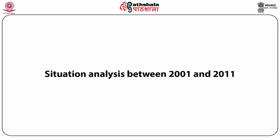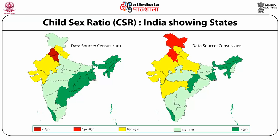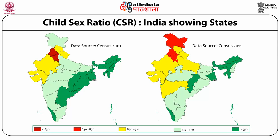Looking at the situation between 2001 and 2011, both census maps show that a place like Jammu and Kashmir had the sharpest drop in the 2011 census. While Punjab and Haryana improved a little bit, there were very sharp drops in Uttar Pradesh and Maharashtra. Gujarat and Rajasthan overall remained at similar levels, but many districts of Rajasthan saw significant drops while some districts of southern Gujarat improved.